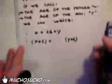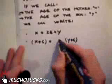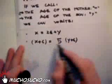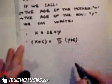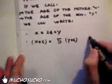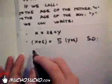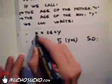And since she will be 5 times older than him, we can write X plus 6 equals 5 times Y plus 6.